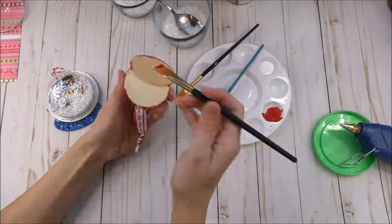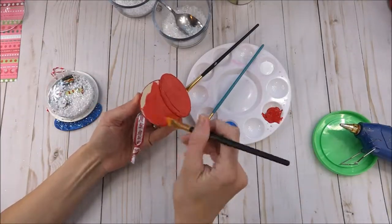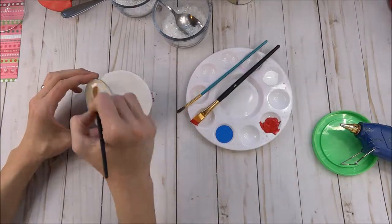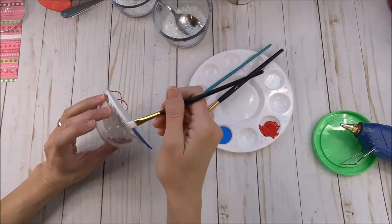Once the front is completely dry, go ahead and flip it over to the back, and you're going to choose a color and paint it a solid coat of paint. This is going to give it a really nice, clean, finished look.